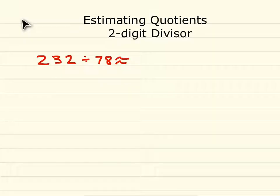For this, we need to round our divisor, which is 78 — we need to round that to the tens place. So 78 will round up to 80.